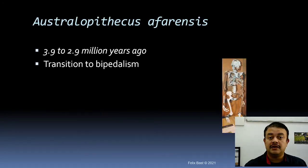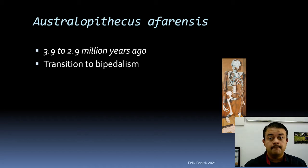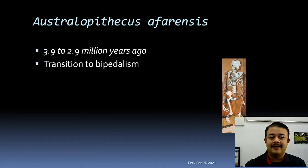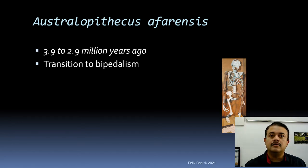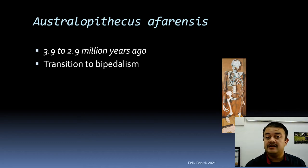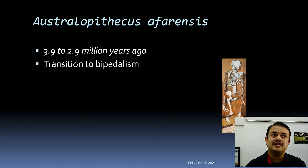One of the most famous fossils in human evolution is Australopithecus afarensis, called Lucy. This fossil has been on display in many of the world's museums. The original specimen is kept in Addis Ababa, Ethiopia. This specimen is around 3.9 to 2.9 million years old, and Australopithecus is very closely related to Homo. The genus Homo is approximately 3 million years old.